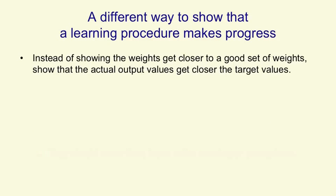For multilayer nets, we're going to need a different way to show that the learning procedure makes progress. Instead of showing that the weights get closer to a good set of weights, we're going to show that the actual output values get closer to the target output values.